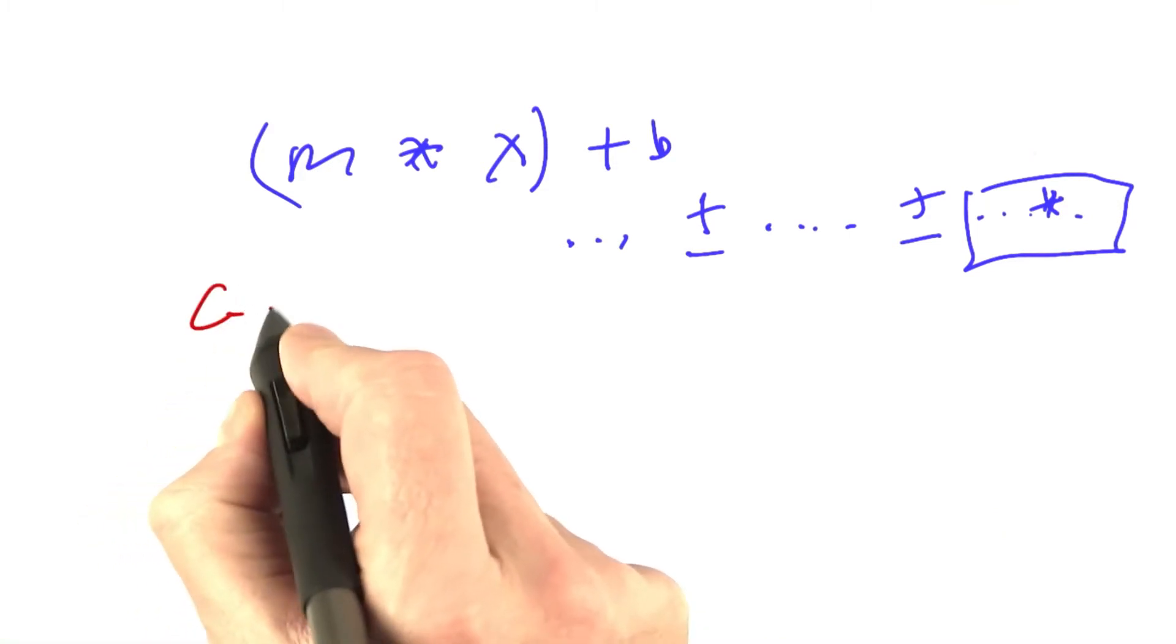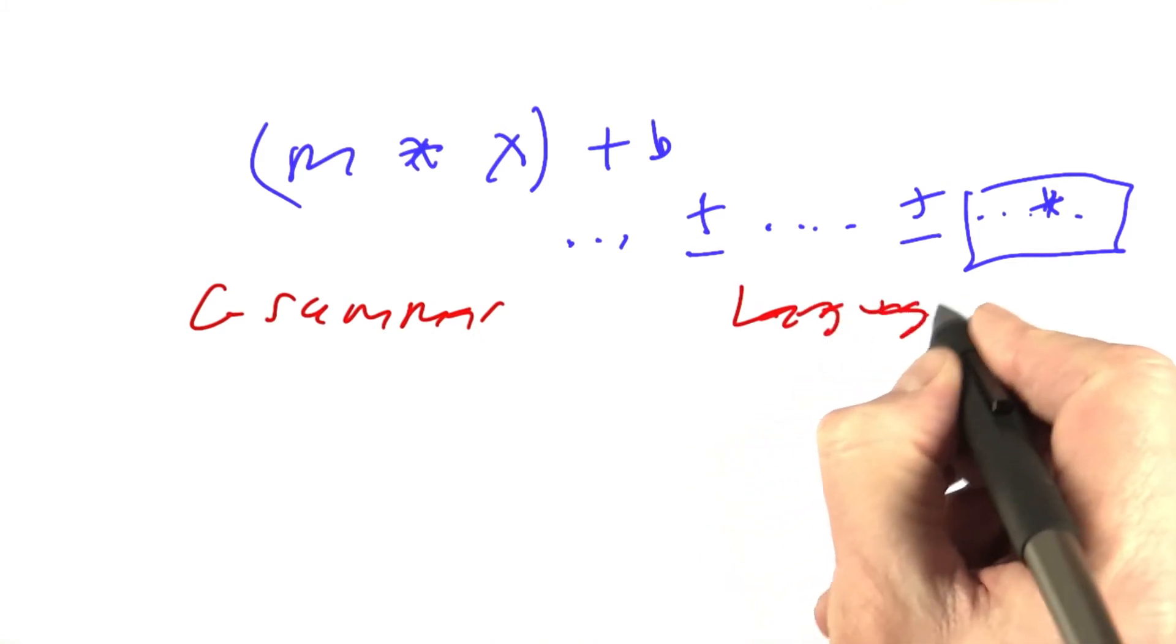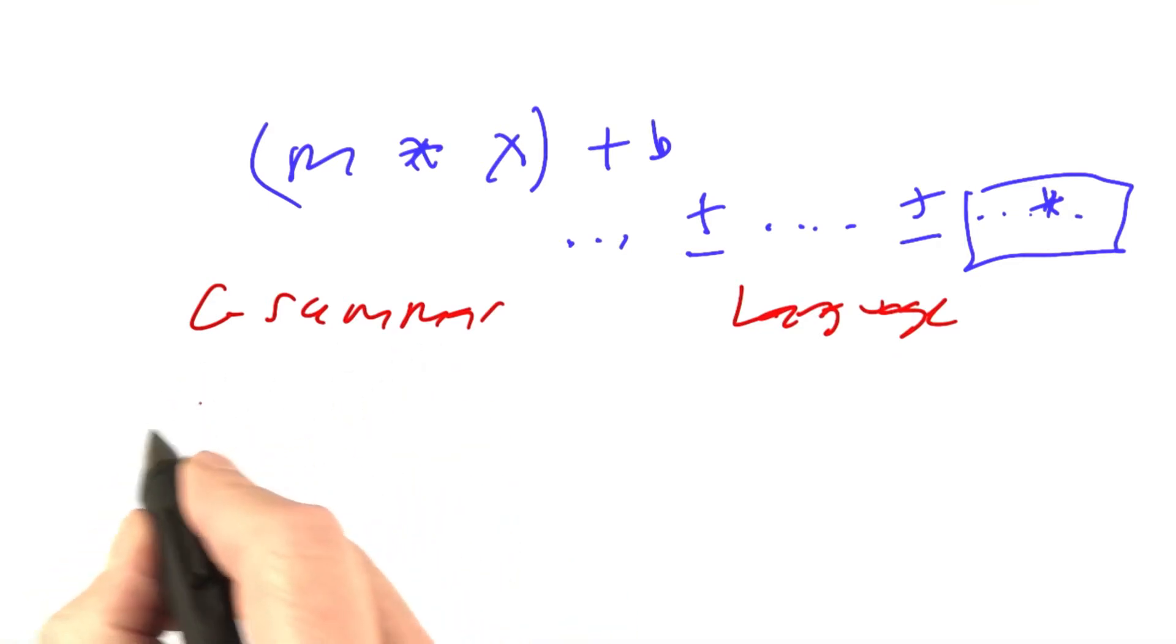What I want to do is write a grammar that defines the language of these expressions. A grammar is a description. It's finite in length and it should be easy to write. A language is a set of all possible strings that that grammar describes. I want to be able to say that in a concise language.